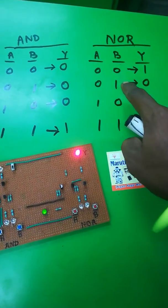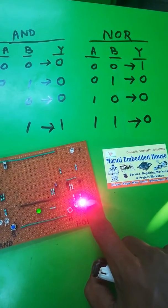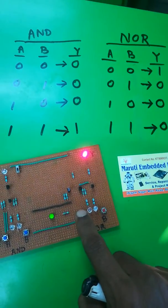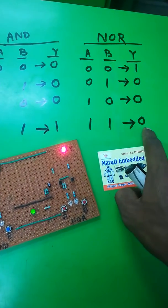If B is equal to 1, then output is 0. If A is equal to 1, then output is 0. If both inputs are equal to 1, then output is also 0.